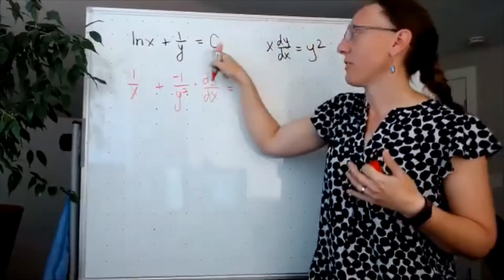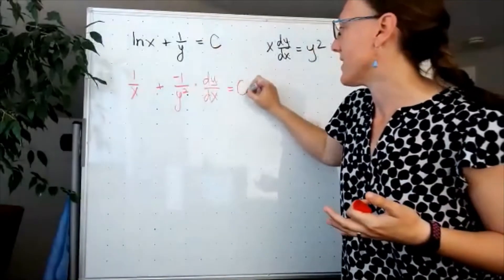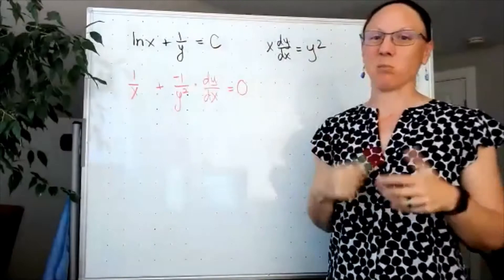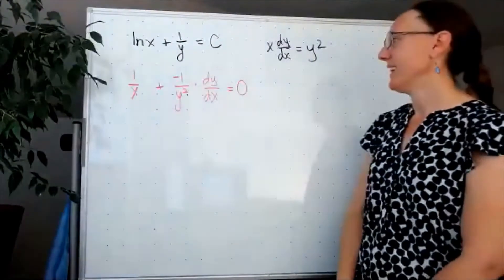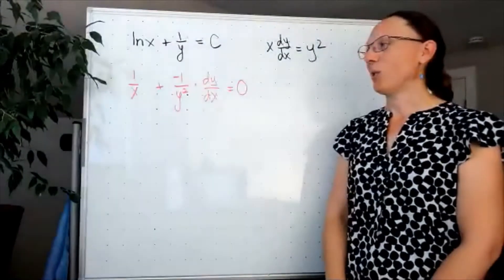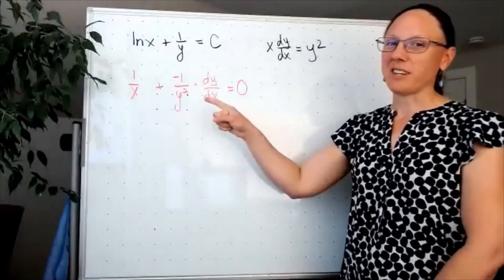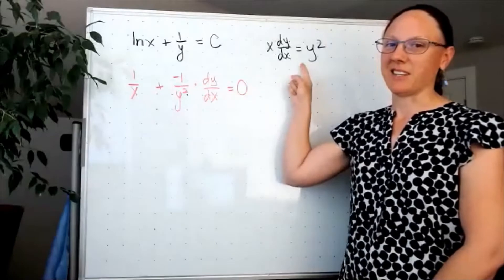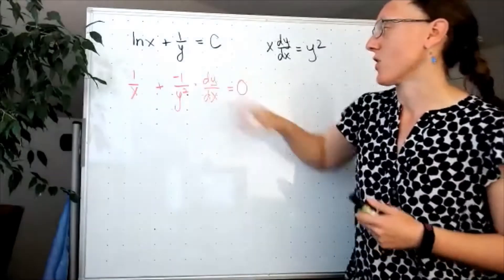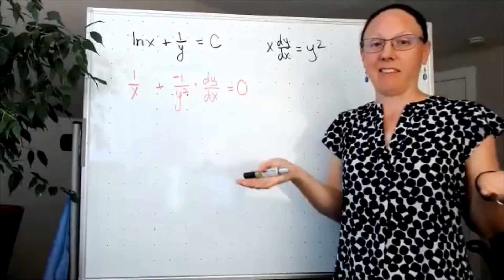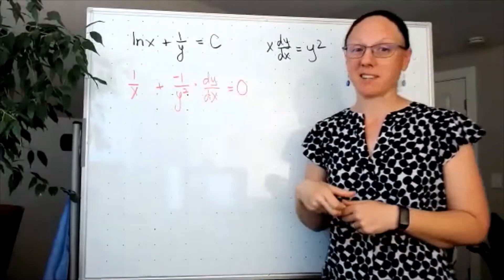And when I take the derivative on the right-hand side, the derivative of c is 0 because c is some sort of constant. Where do we go from there? We're trying to somehow turn this into that. So one option is that we rearrange this to solve for dy/dx, and that's probably my thought of how we would go about this.